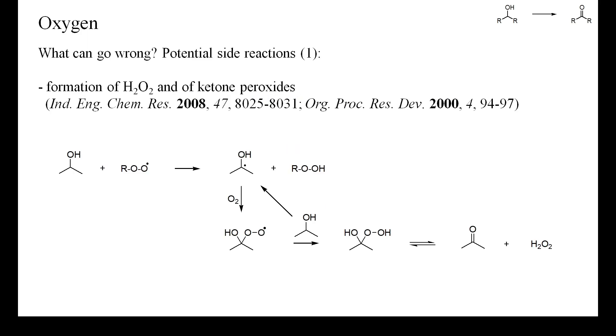So, what are the potential side reactions of aerobic oxidations? One problem is that with some catalysts, hydrogen peroxide can be formed during the reaction. The mechanism sketched here would be the classical radical chain mechanism of an autoxidation. But in the presence of transition metal catalysts, the mechanism may be different.